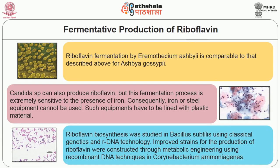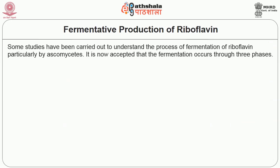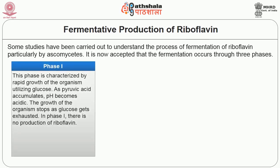Riboflavin biosynthesis was studied in Bacillus subtilis using classical genetics and rDNA technology. Improved strains for the production of riboflavin were constructed through metabolic engineering using recombinant DNA techniques in Corynebacterium ammoniagenes. Some studies have been carried out to understand the process of fermentation of riboflavin particularly by ascomycetes. It is now accepted that the fermentation occurs through three phases. Phase 1 is characterized by rapid growth of the organism utilizing glucose. As pyruvic acid accumulates, pH becomes acidic, and growth stops as glucose gets exhausted. In phase 1 there is no production of riboflavin.